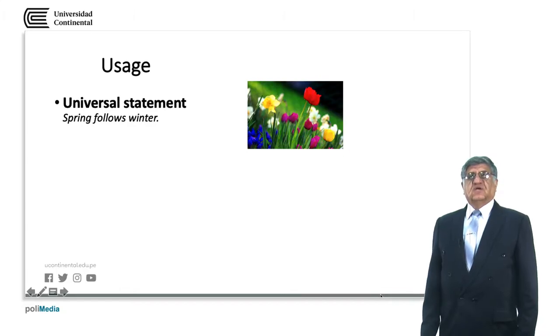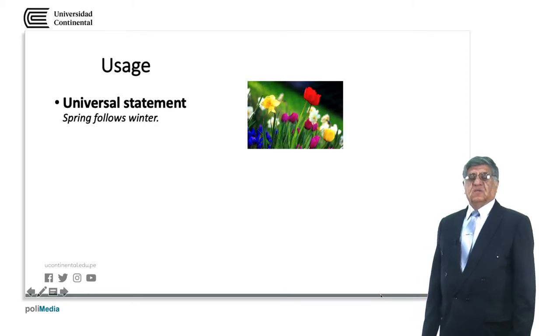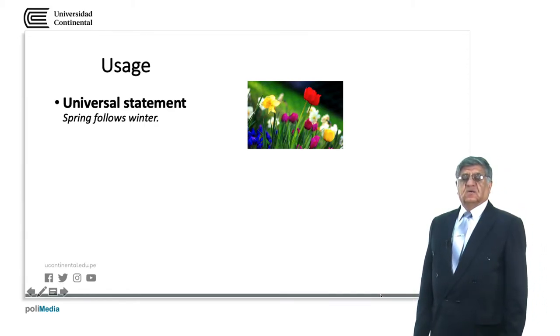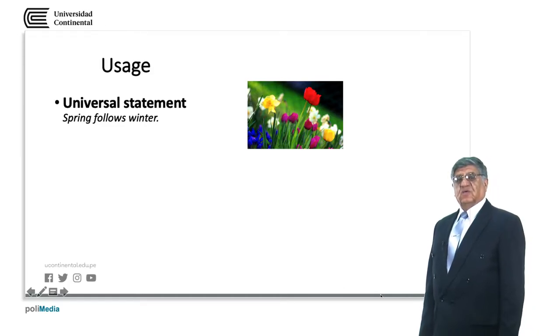In the Present Simple, we need to express things to talk about Universal Statements. That means that a thing and a situation that will happen anyway. It's a logical consequence of anything. For example, spring follows winter, no matter what. Spring will come after winter. Up to the moment, not thinking in our global warming problems, we are going to have spring after winter for a long time.